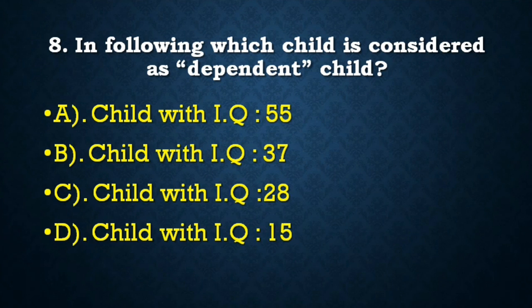Next question: Which child is considered a dependent child? Options: a child with IQ 55, a child with IQ 37, a child with IQ 28, or a child with IQ 15.